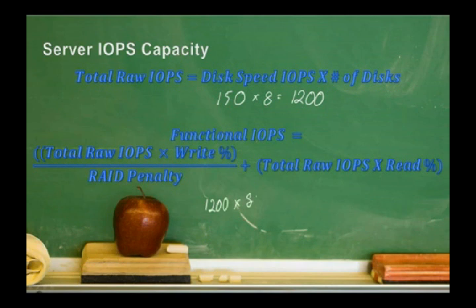That's not the total functional IOPS because we are doing RAID. We have total raw IOPS times the write percentage, which is 80%, divided by the RAID penalty. We're doing RAID 10, and the RAID penalty is two. We add to it the read percentage, so we have 1,200 raw IOPS times 20%. If you get the calculators out, you're going to see that's 720 IOPS. These are the functional IOPS, what those eight spindles in each hypervisor are capable of based on speed and RAID configuration.